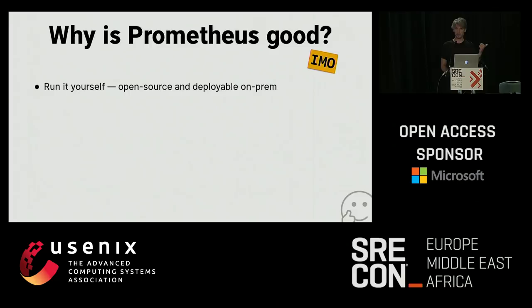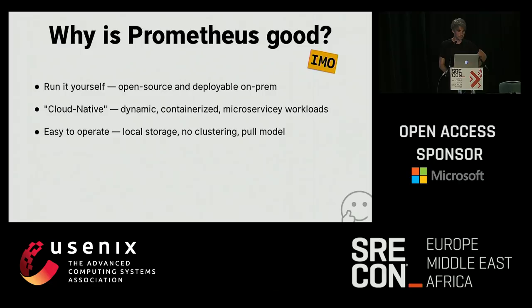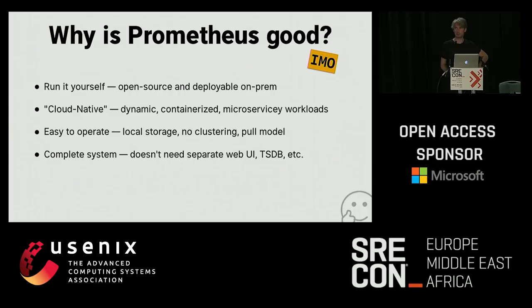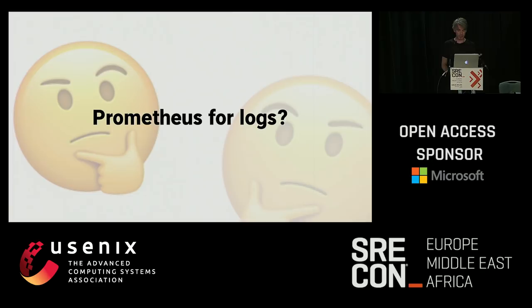I love Prometheus. Why is Prometheus good? In my opinion, you can run it yourself — it's open source and deployable on-prem. It's cloud native, designed to deal with dynamic containerized microservice workloads. It's really easy to operate, uses only local storage, there's no clustering, it has a pull model which is an underappreciated property, and it's a complete system. It scales such that 90% of use cases are satisfied without special effort. Could we build a Prometheus for logs with all these properties baked in? I don't think it would be Elasticsearch — I think it would be something fundamentally different.